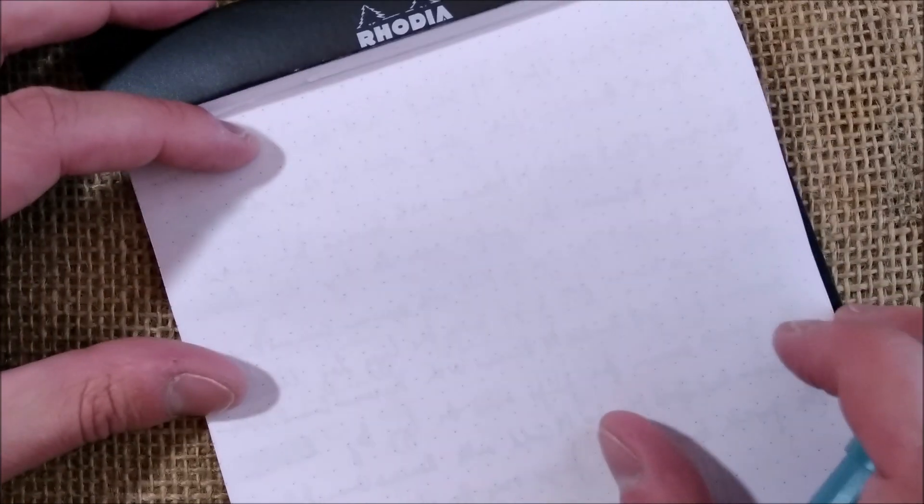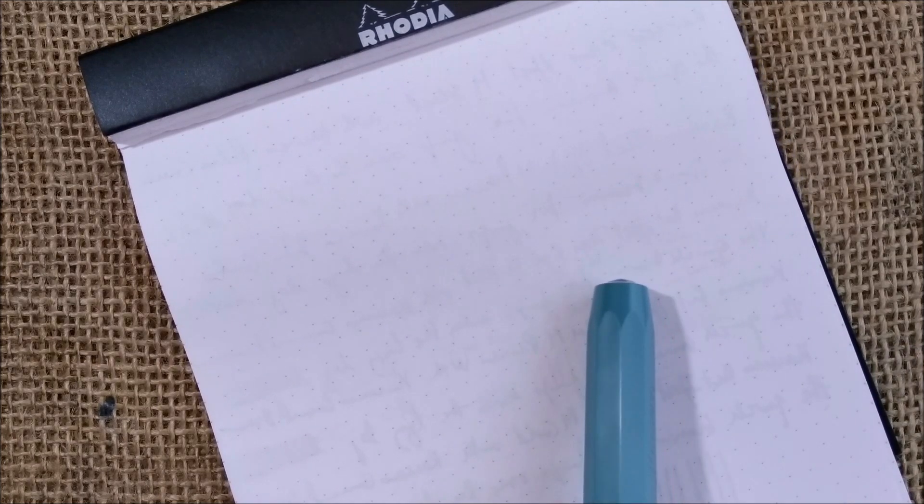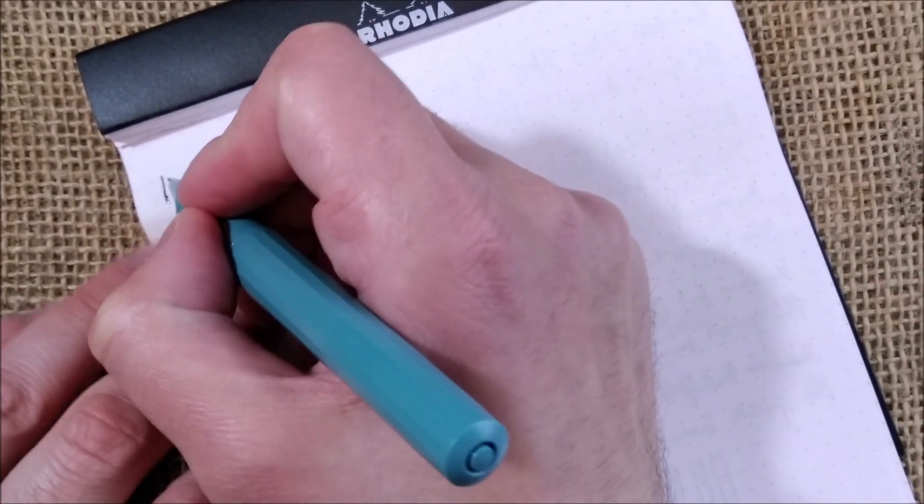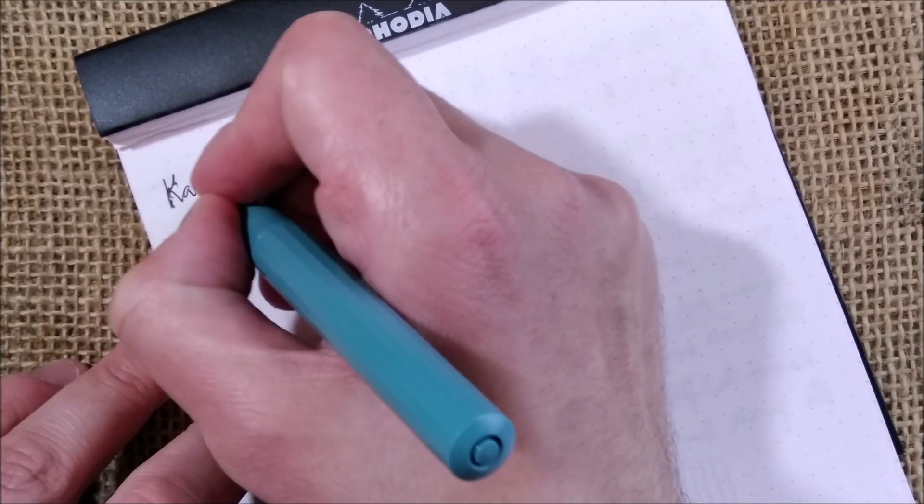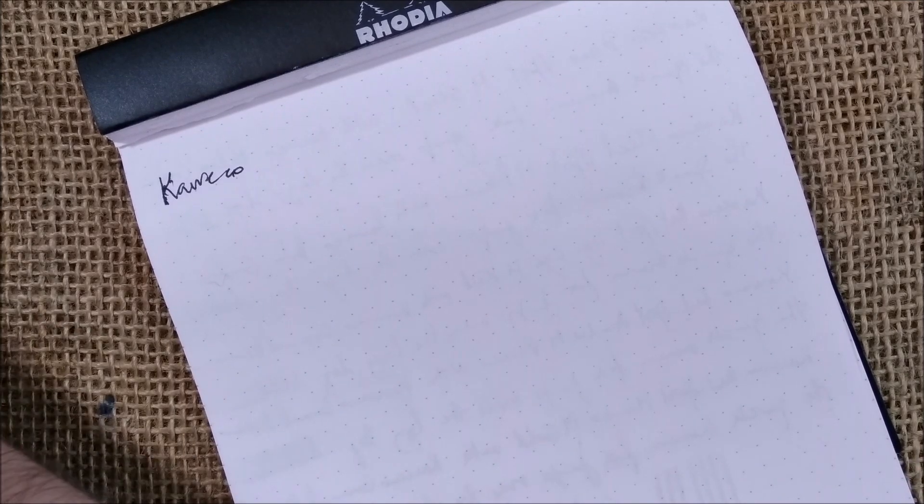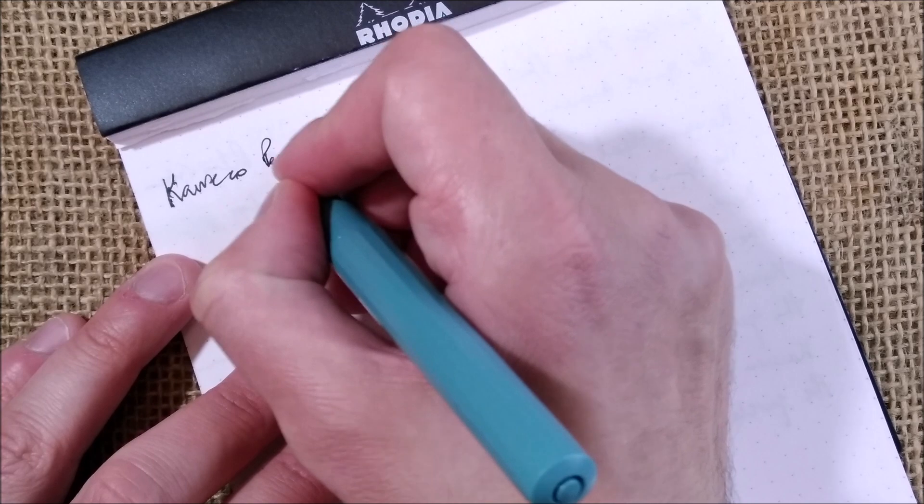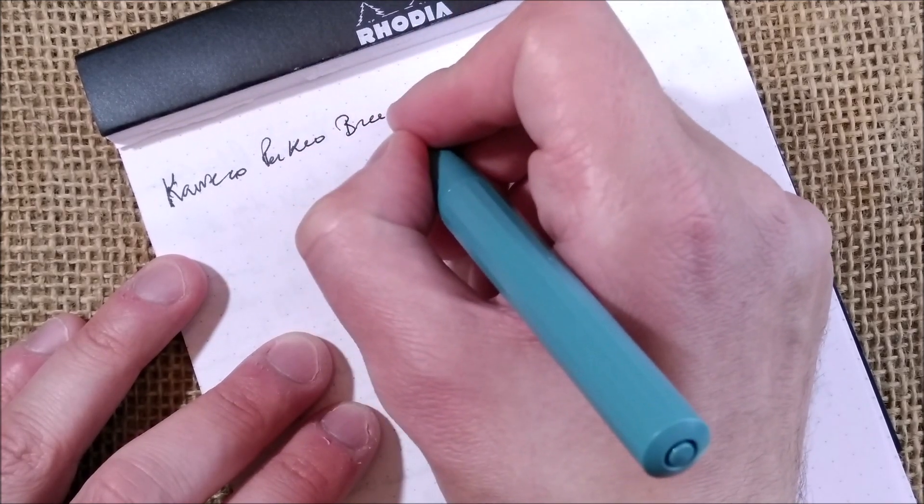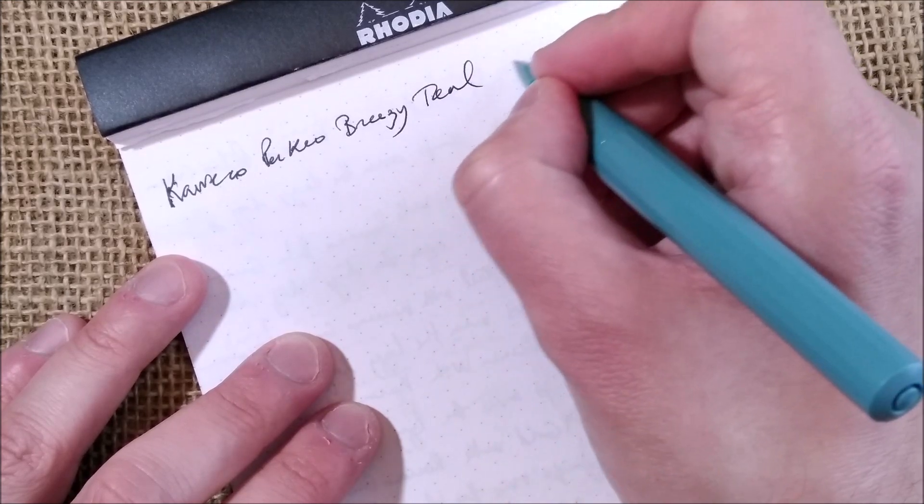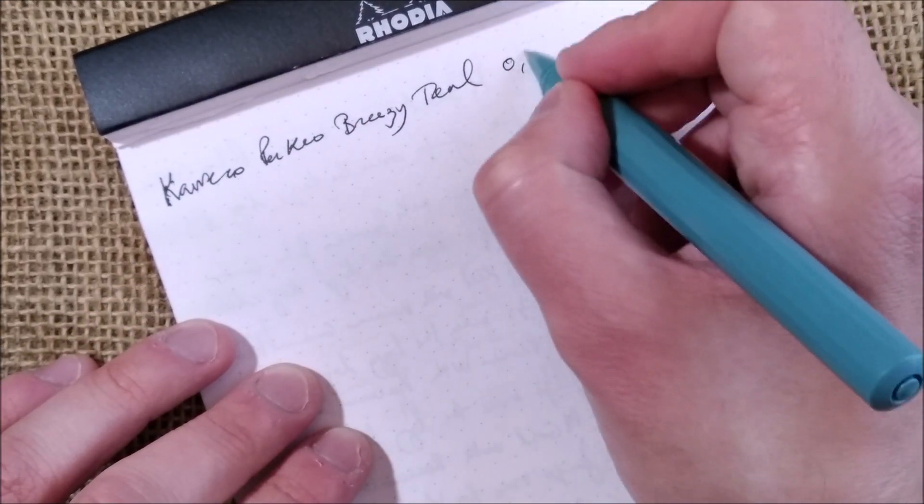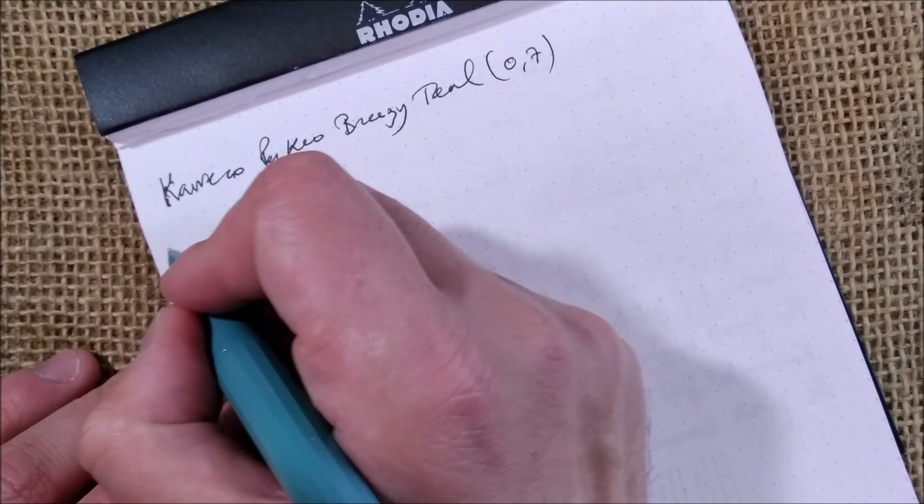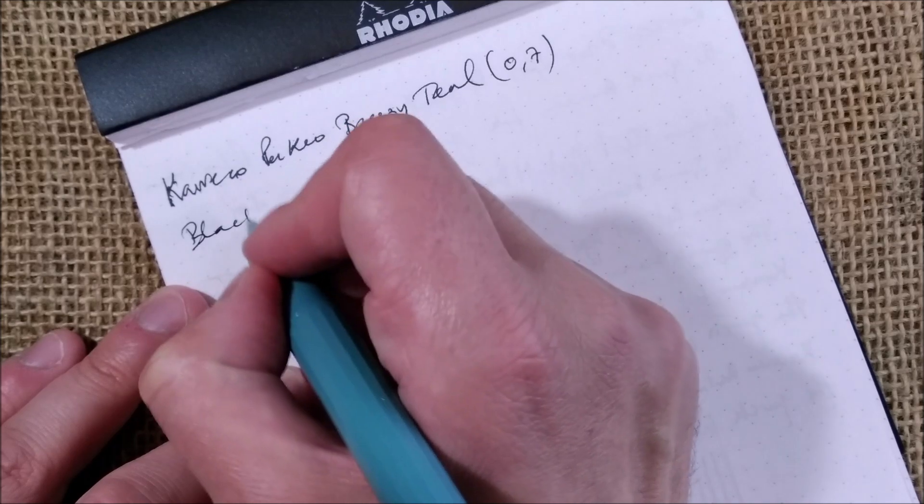Now just for the writing sample, I don't have much to show, because this pen is not a fountain pen, there is not a lot to test. So let me just use this. Oops. This is the Kaweco. I have some burlap background fibers that were on top of the tip. So this is the Kaweco Perkeo Breezy Teal with 0.7 point.